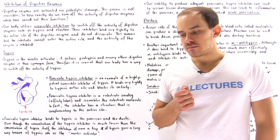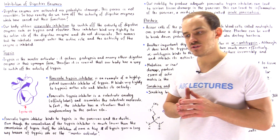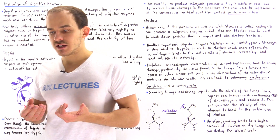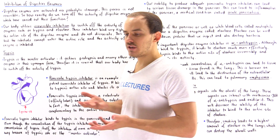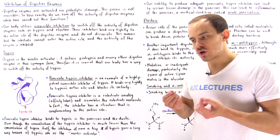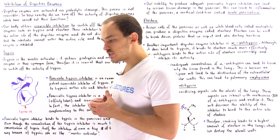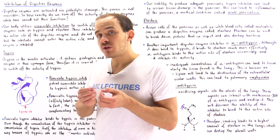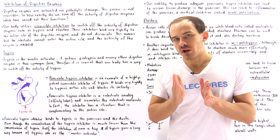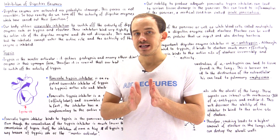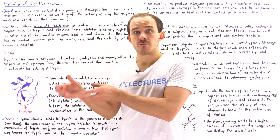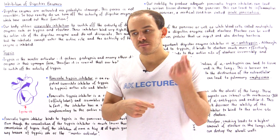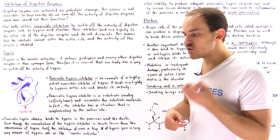Before digestive enzymes can begin digesting the proteins we ingest, they have to be activated via the process of proteolytic activation, or proteolytic cleavage. The problem with proteolytic cleavage is that once an enzyme undergoes it, that process cannot be reversed. So proteolytic cleavage is a one-way street.